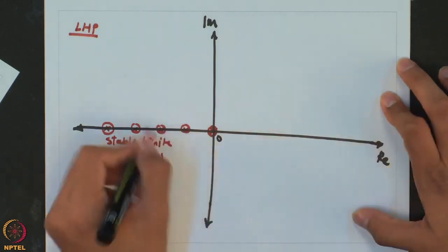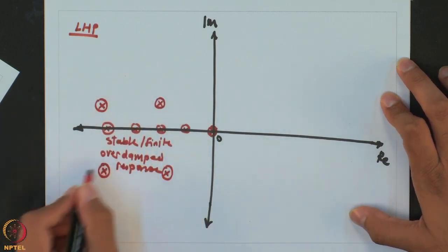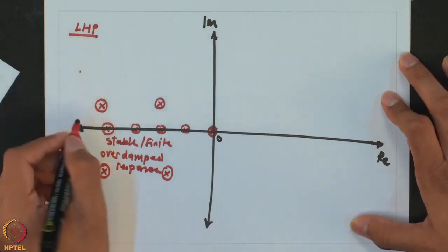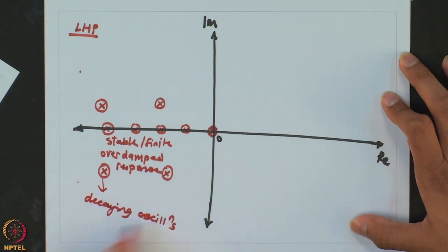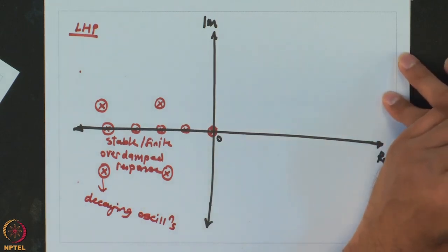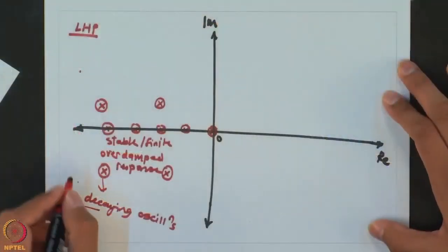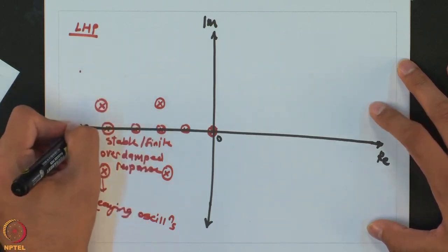Oscillations will appear if there are complex conjugate poles. If you have any pole in the upper or lower left quadrant — still in the left half plane — what you get are decaying oscillations. These terms give you E raised to (A plus Bi), so E raised to AT times E raised to BiT. The first term gives the magnitude of oscillation and the second gives sines and cosines. Since the magnitude is on the negative side, the oscillations will decay.